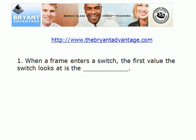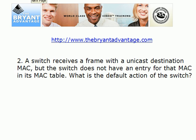Let's go over the answers. The first one is the source MAC address. One reason is that it's the source MAC address that is actually used to build the dynamic MAC address table. It's a bit counterintuitive at first, because you might think the switch is going to look at the destination MAC address first to see how the frame should be handled. It's definitely going to do that, but the switch looks at the source MAC address first. When a switch receives a frame with a unicast destination MAC but has no entry for that MAC, the default action is to flood the frame — sending it out every port on the switch except the one it came in on.